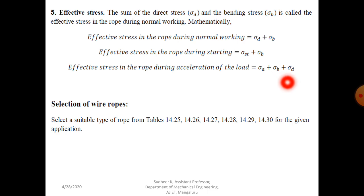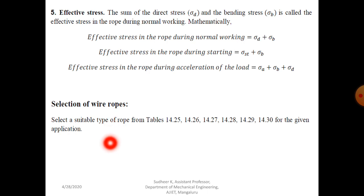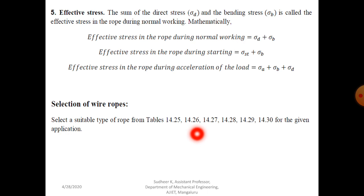Now coming to the last part — selection of wire ropes. We have seen different constructions: 6×9, 6×19, 6×37, and so on. How to select a particular wire rope for a particular application is very important. For that purpose we have manufacturer's catalogs. From your data book, you have to go through tables 14.25, 14.26, 14.27, 14.28, 14.29, and 14.30 for the given application. This is the process of selecting wire ropes for a particular application.